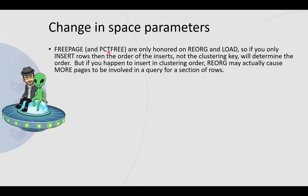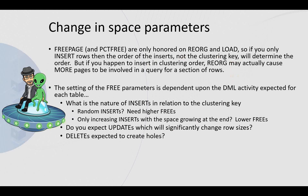Let's change some space parameters. Free page and percent free are only honored on a reorg or a load. If you only insert rows, then the order of the inserts — not the clustering key — will determine the order. But if you happen to insert in clustering order, a reorg may actually cause more pages to be involved in a query. The setting of free parameters is dependent upon the DML activity expected for each table. You need to work out the nature of inserts in relation to the clustering key. Are they random — do you need higher free? Only increasing inserts with the space growing at the end — you need lower free. Do you expect updates which will significantly change row sizes? Are your deletes expected to create holes? Intelligent setting of free page and percent free is needed for reorg.